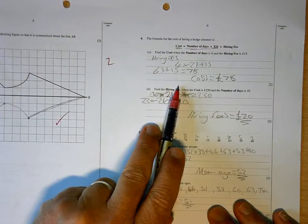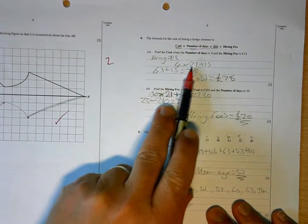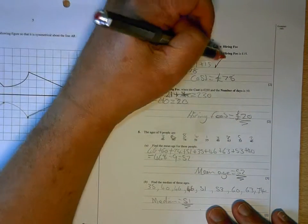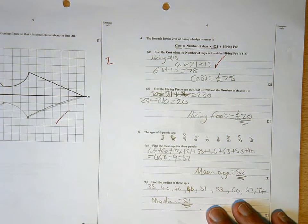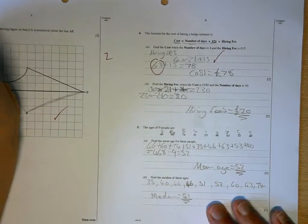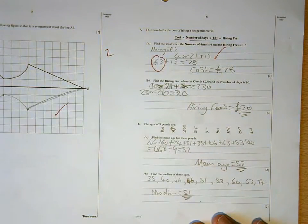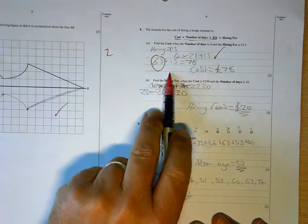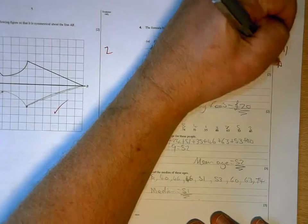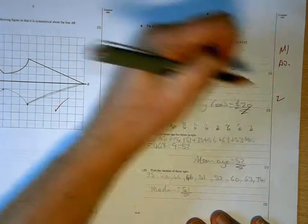Now, you've gone wrong here. Four days times 21, add 15, is correct. But, four times 21 isn't 63. Considering this is a calculator allowed paper, you've made two strange mistakes there, multiplying. So, your method is right, but your answer is wrong. This one, the harder one, you've got right, well done.